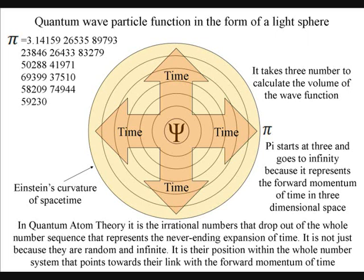The wave function expands as a volume of space in the form of a light sphere. It takes three numbers to calculate a volume of space, and the decimal expansion of pi starts at the number three.